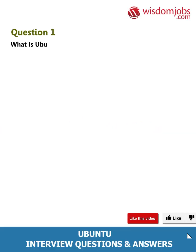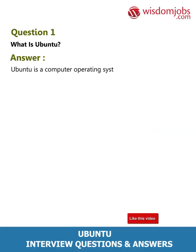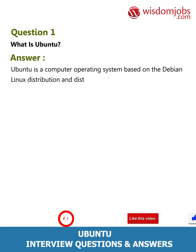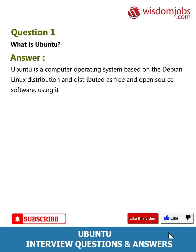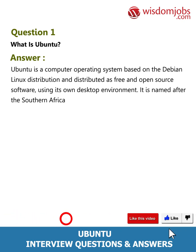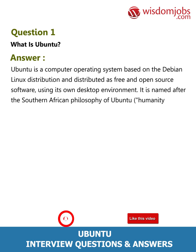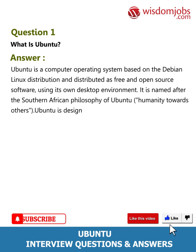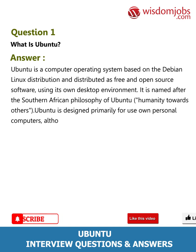Question 1: What is Ubuntu? Ubuntu is a computer operating system based on the Debian Linux distribution, distributed as free and open source software using its own desktop environment. It is named after the Southern African philosophy of Ubuntu, meaning humanity towards others. Ubuntu is designed primarily for use on personal computers, although a server edition also exists.